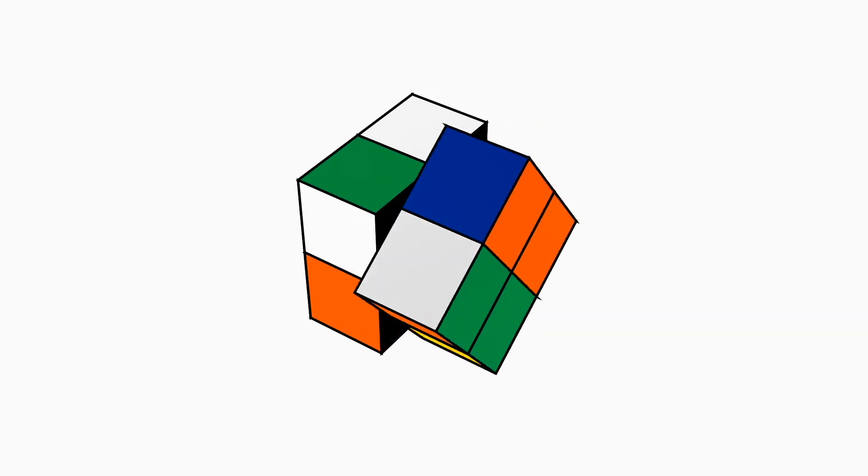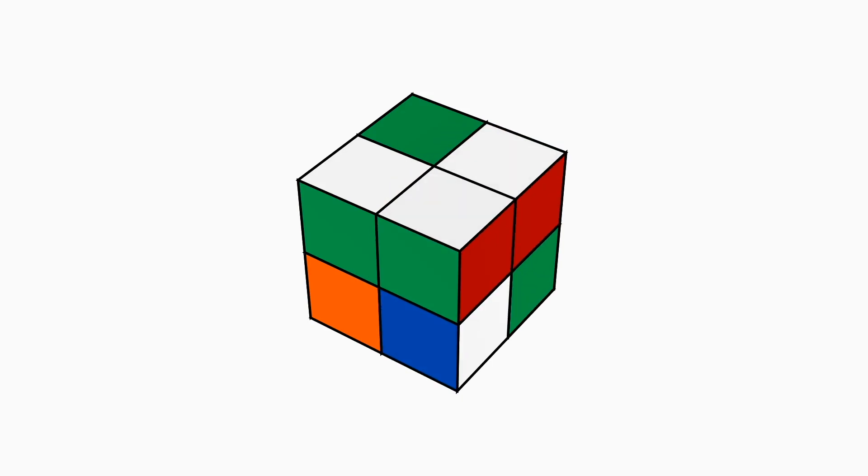We can now use the Y-perm to swap the buffer with the target. But then, we have to get the target back to where it originally was. To do that, we can turn the bottom face counterclockwise to get everything back in place.